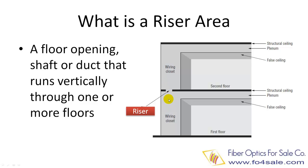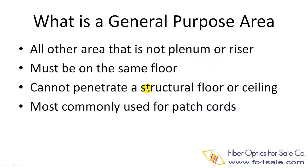In order to prevent fire from passing from one floor to another, fiber cables used in riser areas must have certain fire resistant qualities. The next fire rating area is called general purpose area. Typically, all other areas inside a building which is not a plenum or a riser area is a general purpose area. General purpose area is within a floor — it cannot penetrate a structural floor or ceiling. This rating is the most commonly used for fiber patch cords, since patch cords are not supposed to go through a floor or ceiling.